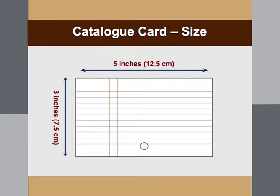The catalog card size, as mentioned, is 5 inches wide and 3 inches in height. This is the standard catalog card followed in libraries. When you observe this particular card, you will notice two red vertical lines and one horizontal red line, which indicate where to start entering the bibliographic details. There are also some green horizontal lines. This is the typical catalog card normally used in libraries.